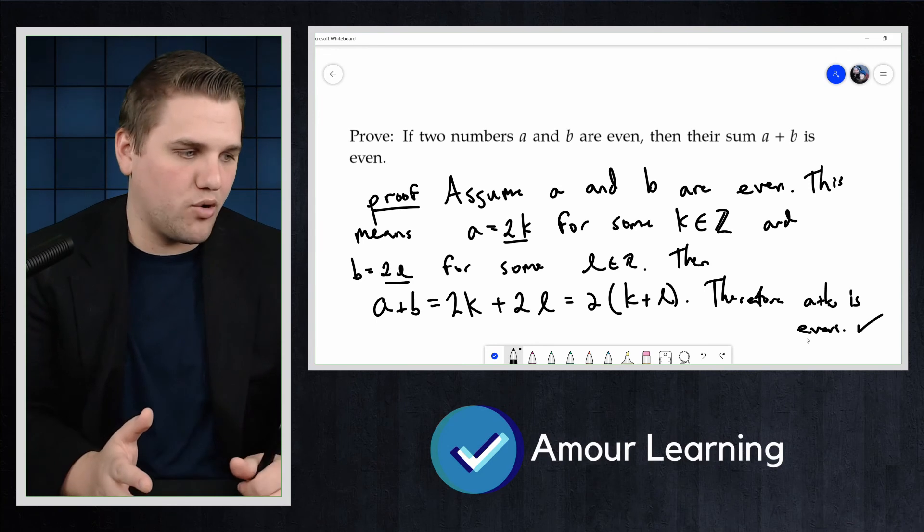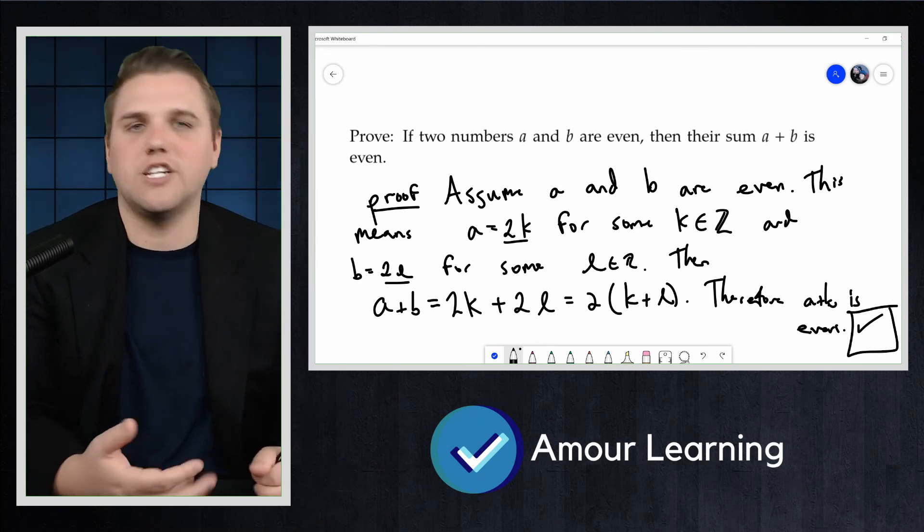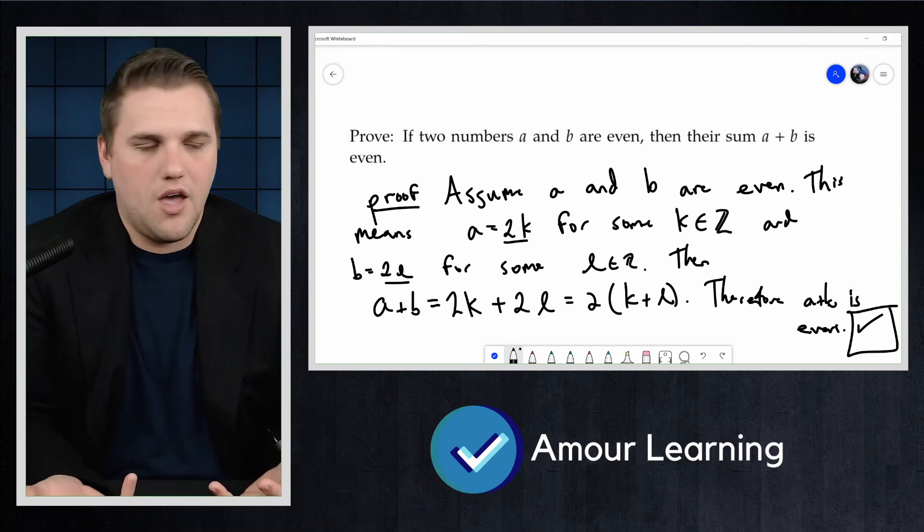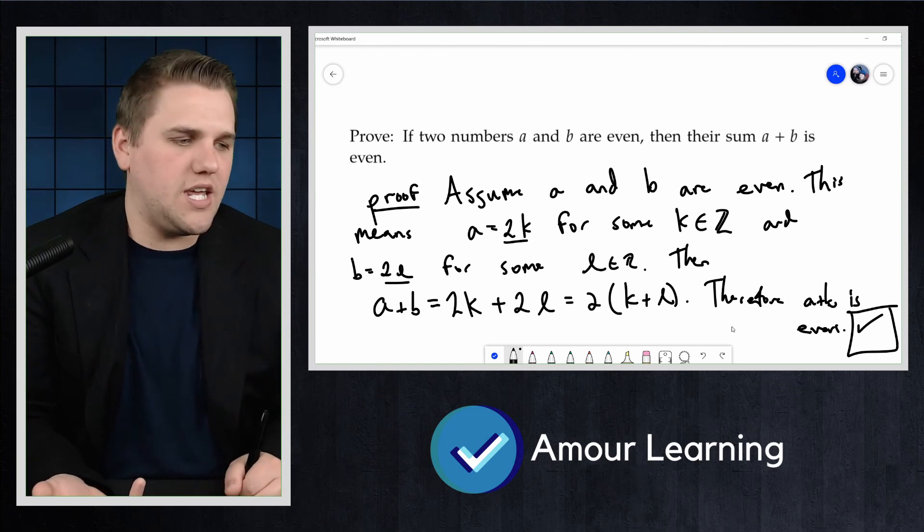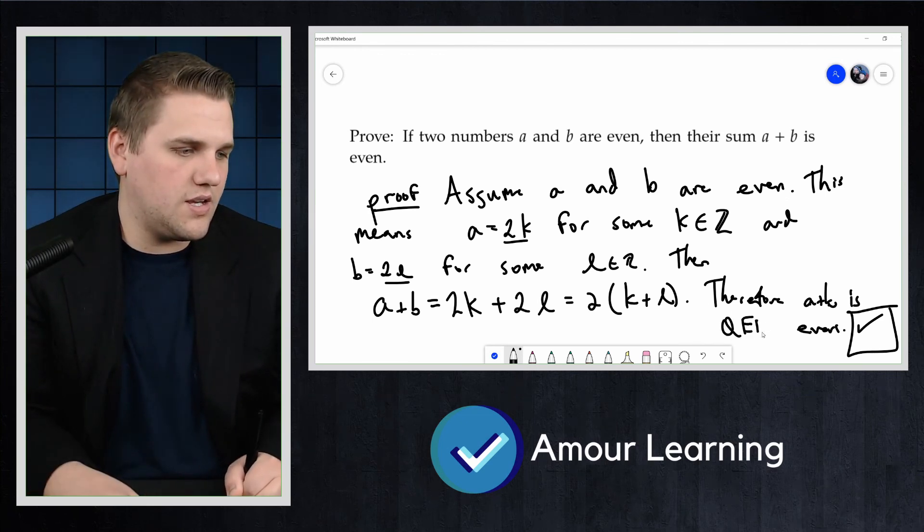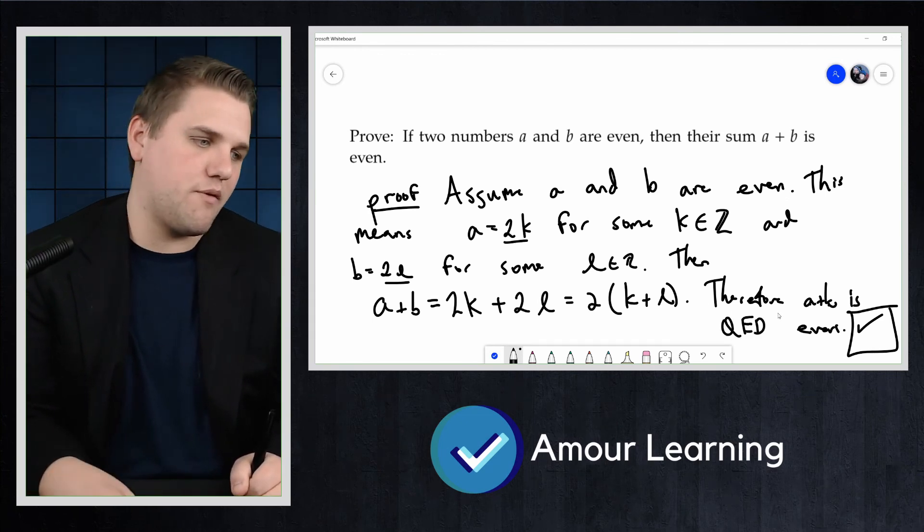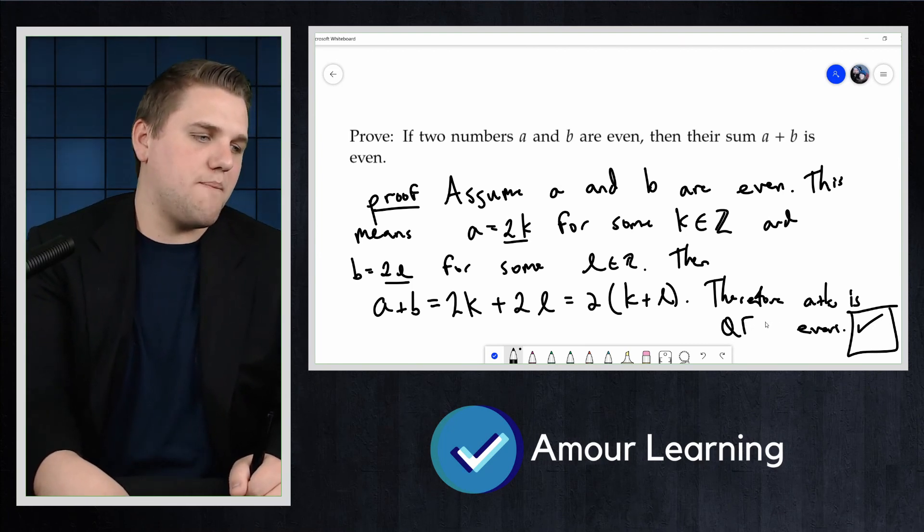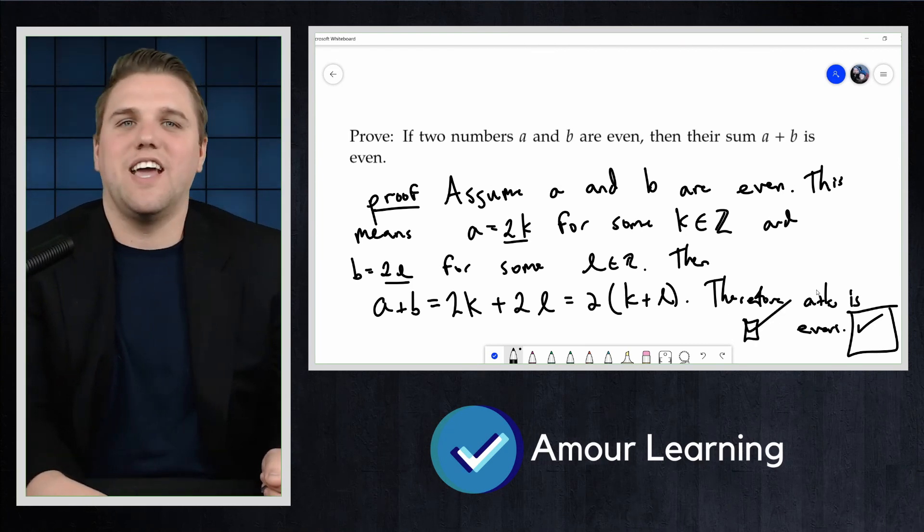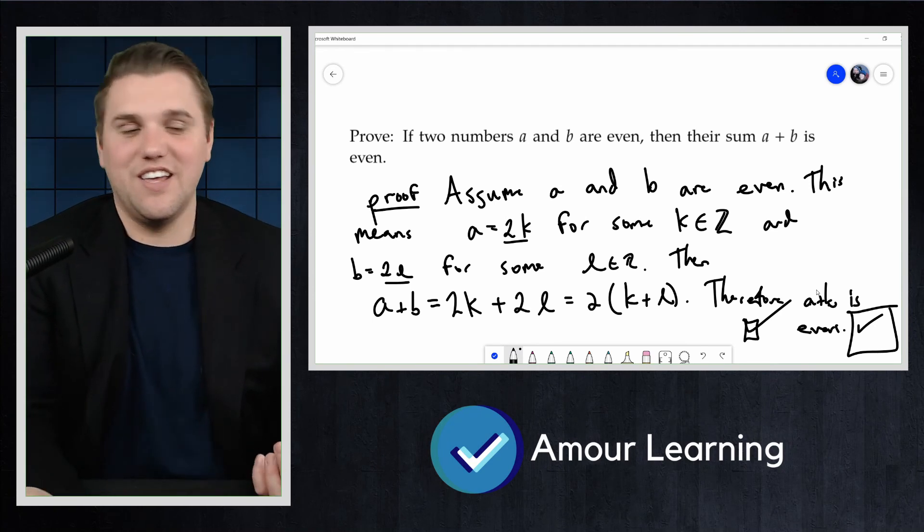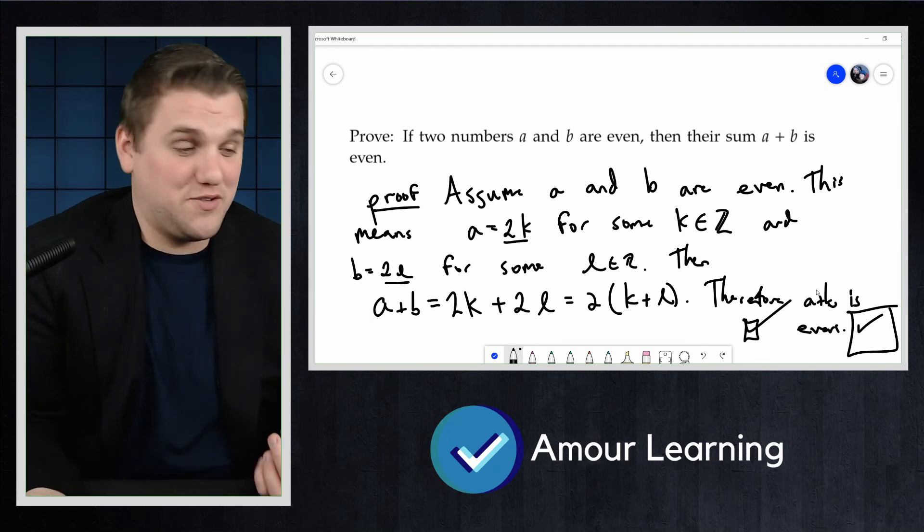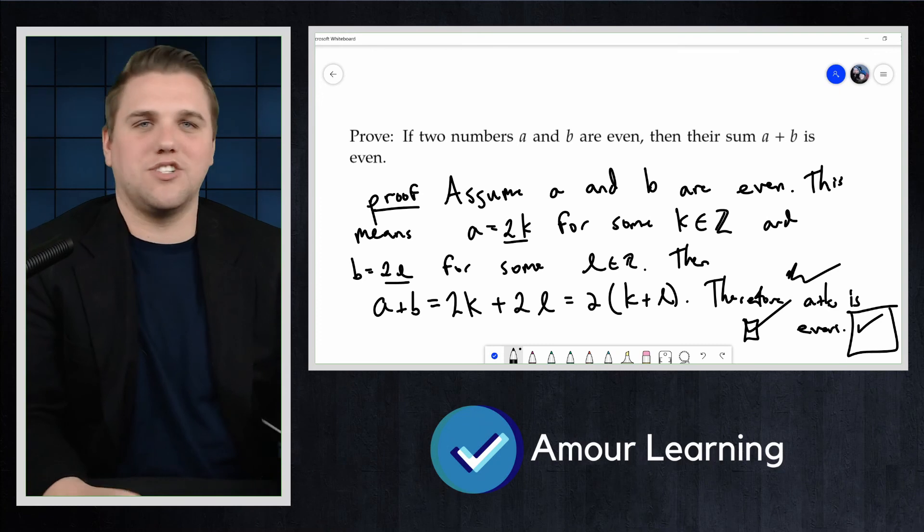Now, something that's really important about writing proofs: I put a little check mark here. That just means I'm done with the proof. Some people put QED, that's one thing that I've seen a lot of professors use. Some people will make a little check box and check it to show that they are done. And some people will just sign their proofs.